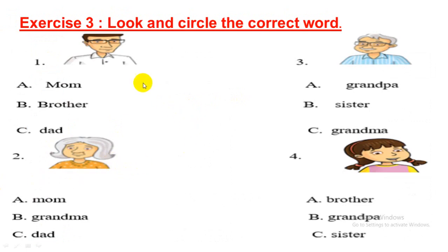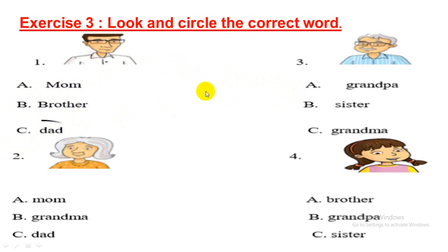Exercise 3: Look and circle the correct word. You look at the picture and choose the correct word: A. Mom, B. Brother, C. Dad. Look at picture 1 — you choose C. Dad. Well done. Okay, the others, please do it the same.